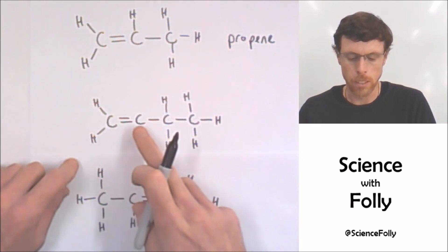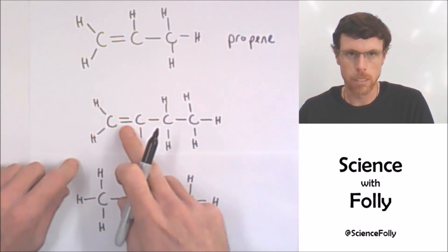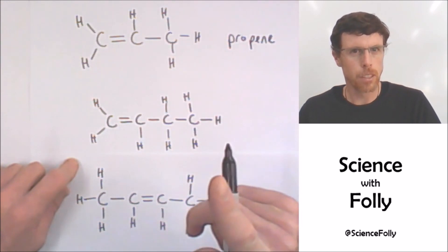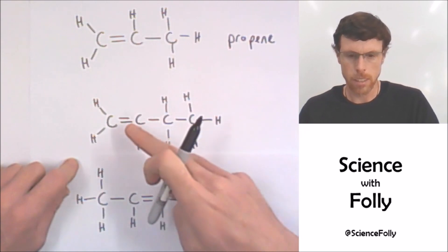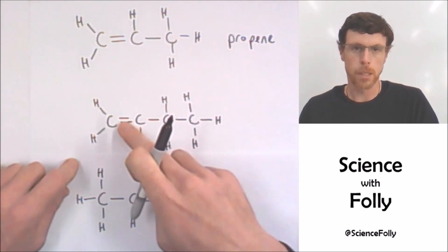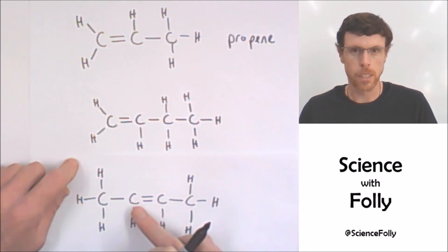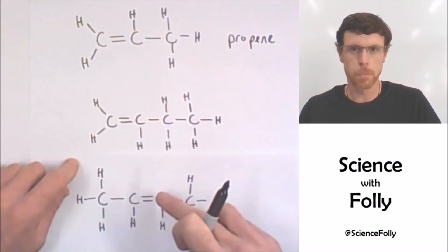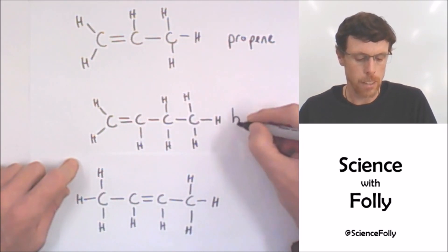Here's one with four carbons: one, two, three, four — and the double bond is here, so we'd call it butene. But because butene has two structural isomers, since the double bond can be between carbon one and two, or between carbon two and three, we have to specify where the double bond is.